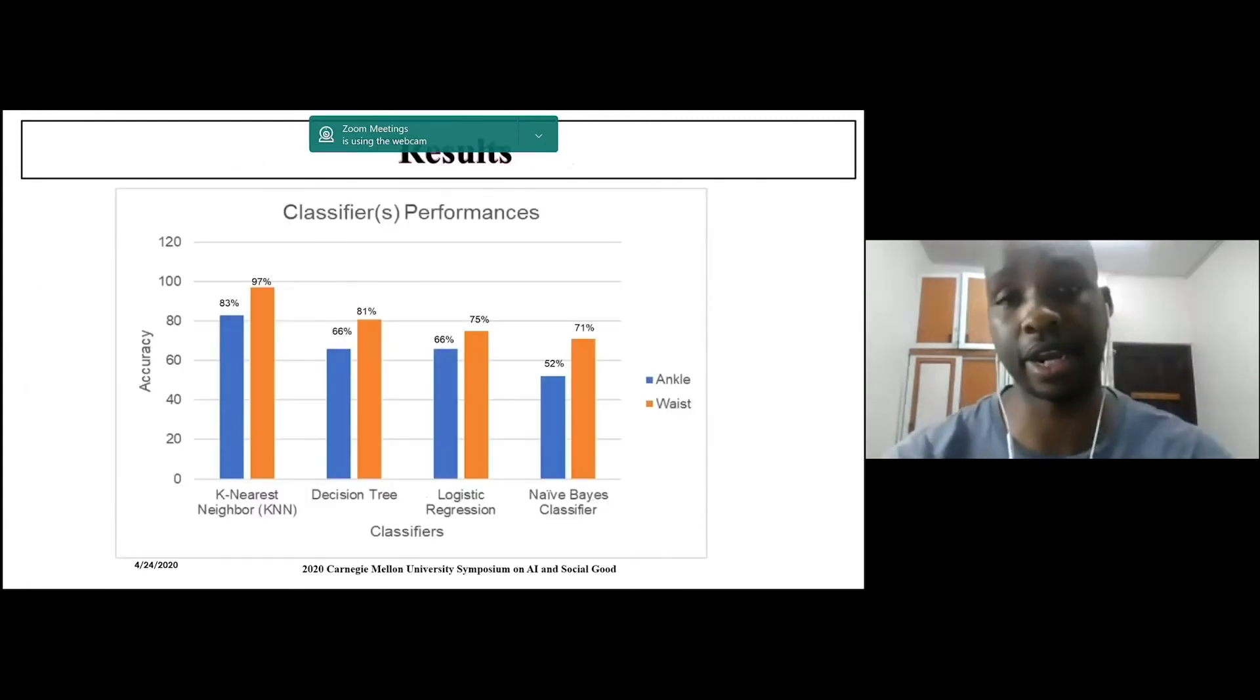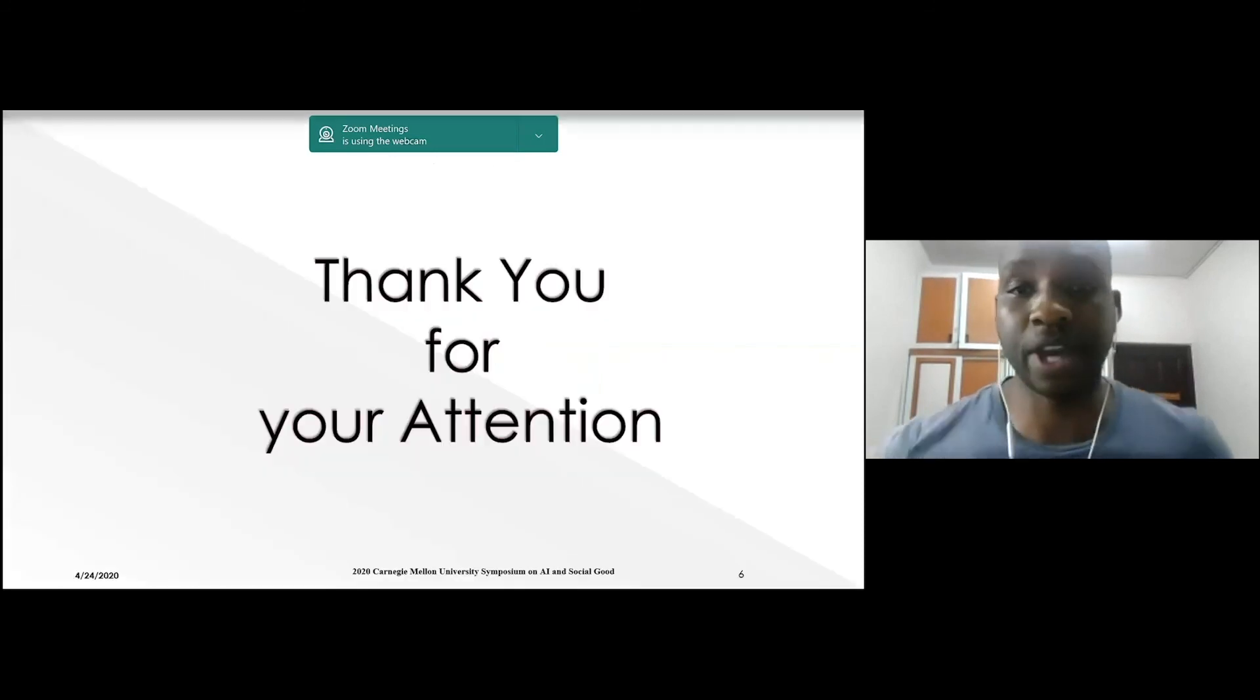This is the result we've gotten by testing the data using four different machine learning classifiers. The results show that K-nearest neighbor has the highest accuracy level in both data collected from two different positions - the sensor attached at the waist position has 97% accuracy and the ankle has 83%. In both cases, waist position captures much more acceleration in elderly people. Thank you for your attention.